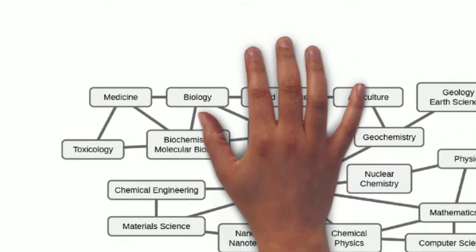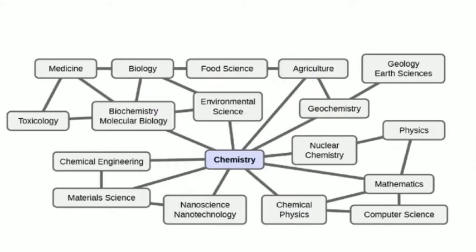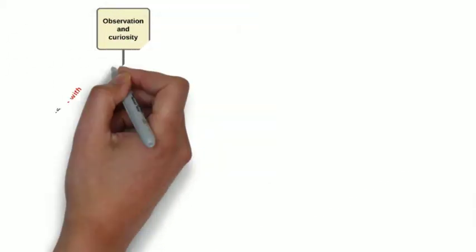You may have heard modern chemistry referred to as the central science. That's because so many other things depend on it. You have to understand chemistry to understand the making of medications, toxicology, material science, and so many other things.